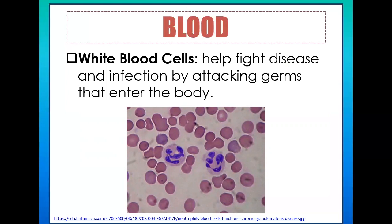White blood cells help fight disease and infection, which is one of the functions of blood mentioned earlier — immunity. This is another reason why blood is considered the river of life. Unlike red blood cells, WBCs are nucleated, meaning they have a nucleus and complete organelles.